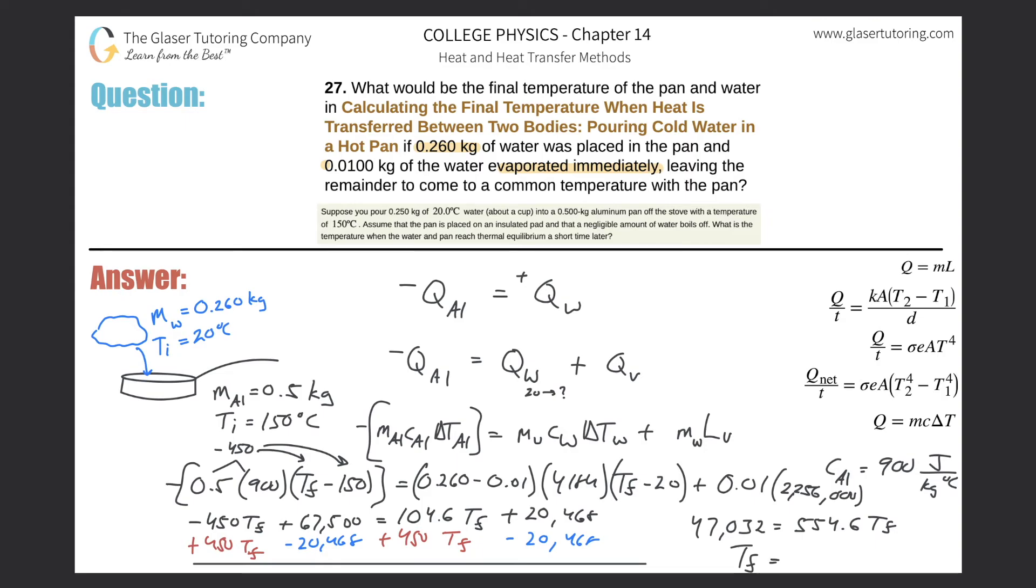So the final temperature here is going to be about 84.8 degrees Celsius. As we said before, if you were to look at the halfway point between 20 and 150, the average would be about 85. Notice it lies, as I was mentioning, just a little bit closer to the water than it did to the aluminum.